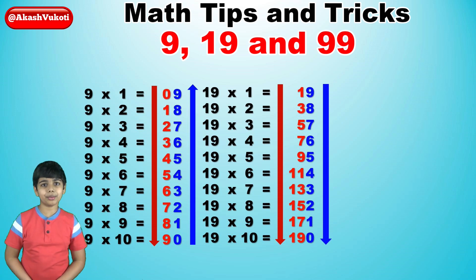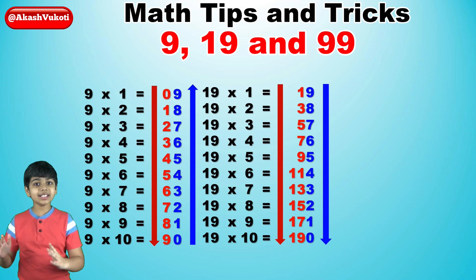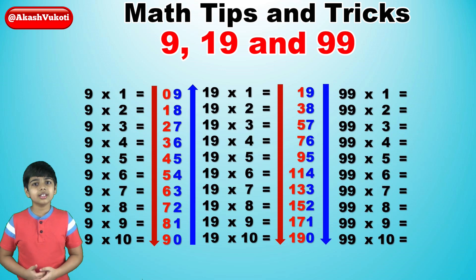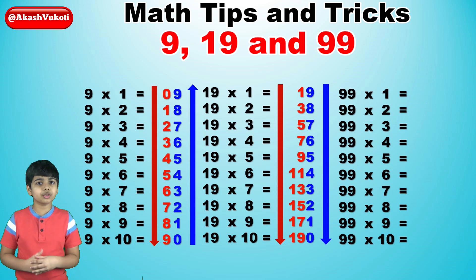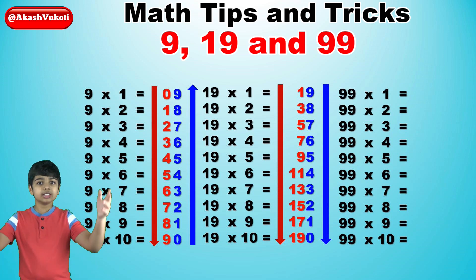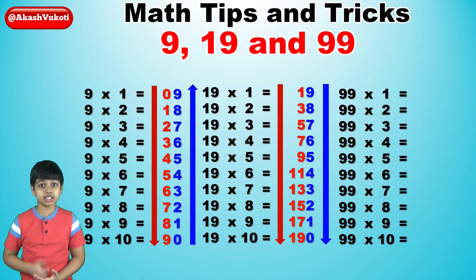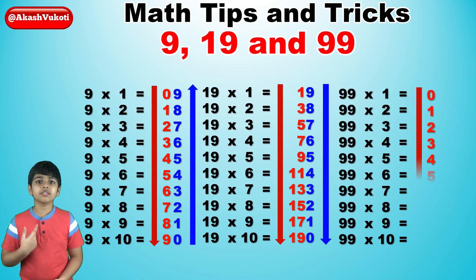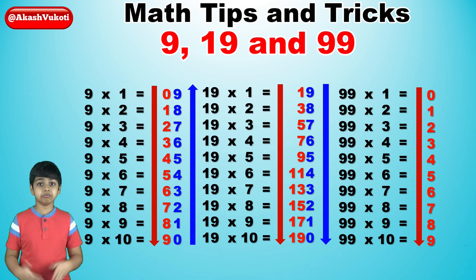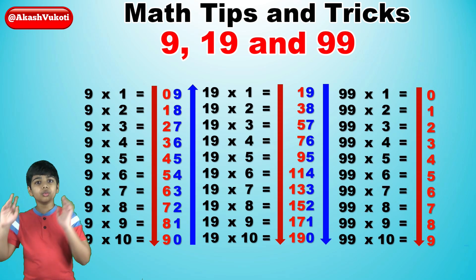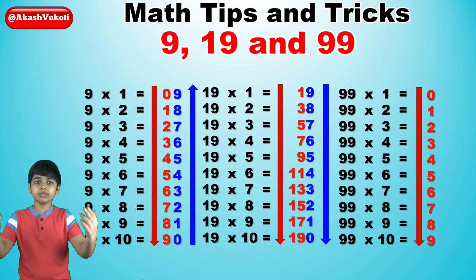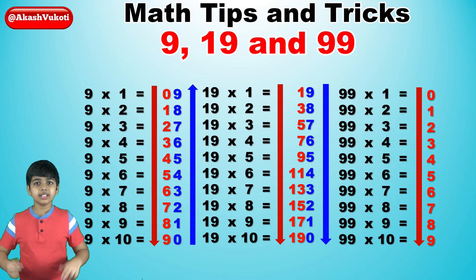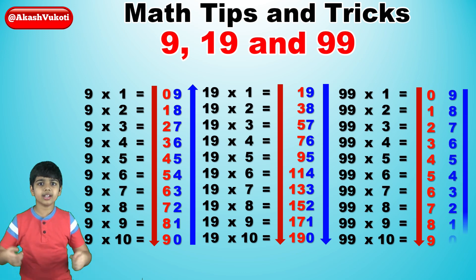And now, the 99x table — our final table in this video. The 99x table trick is basically the exact same as the 9x table trick with one additional twist. So, the leftmost column is just 0 to 9 in ascending order: 0, 1, 2, 3, 4, 5, 6, 7, 8, 9. Super easy. And the rightmost column is just 9 to 0 — the numbers from 0 to 9 backwards, in descending order: 9, 8, 7, 6, 5, 4, 3, 2, 1, and 0.